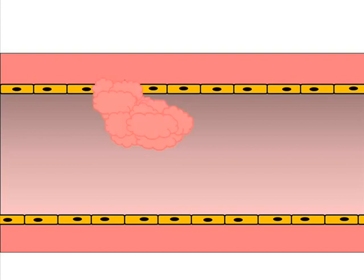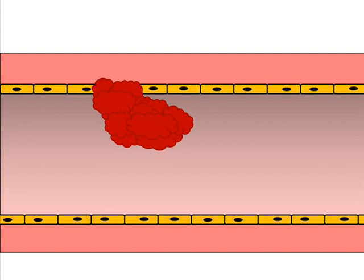When a thrombus propagates in circumstances where blood flow is slower, the proportion of red blood cells trapped within the expanding thrombus is much greater, giving the thrombus a deep red color.